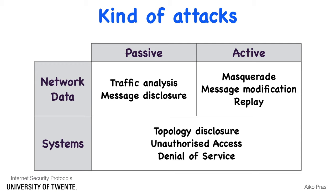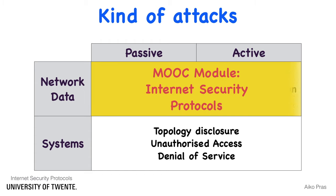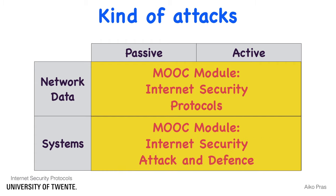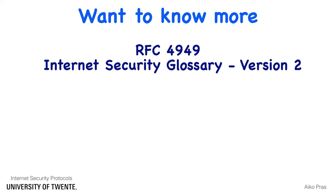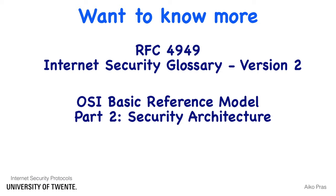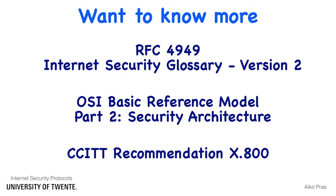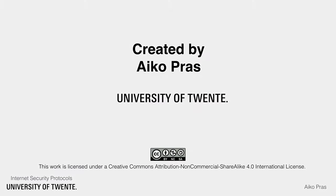In subsequent videos we will discuss these attacks in detail. Note that the detailed analysis of attacks on network data is the focus of our Internet Security Protocols MOOC module, and attacks on network systems is the focus of our Internet Security Attack and Defense MOOC module. Other good sources of information are RFC 4949, a glossary of security terms used by the IETF; Part 2 of the OSI Basic Reference Model, which defines a security architecture for network systems; and CCITT Recommendation X.800, which is identical to the OSI security architecture and is freely available on the internet.